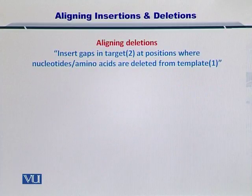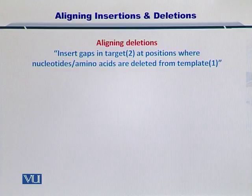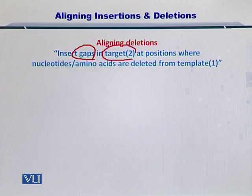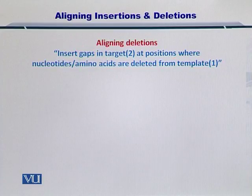Next, aligning deletions. Just like insertions, you need to handle deletions as well. An amino acid may be deleted from a protein during the process of evolution. To handle that, we insert gaps in the target where some amino acids or nucleotides are deleted from the template. Let's take a look at the example.